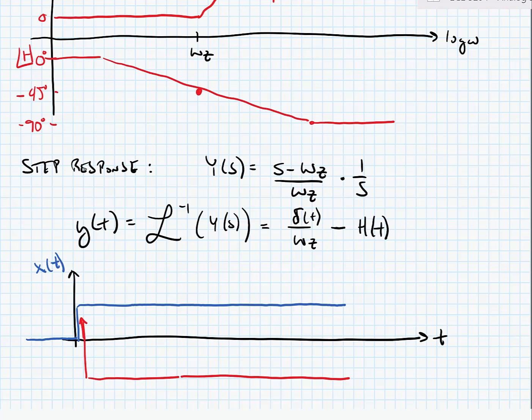Alright, so we've now examined the frequency response and step response for our four possible cases for single order systems. That is a system that has only a left half plane pole, only a right half plane pole, only a left half plane zero, or only a right half plane zero. Now it's important to note that most systems have more than one of these components. In other words, they have more than one pole or more than one zero. And the only real restriction we have is that for our system to be stable, it cannot have any right half plane poles.